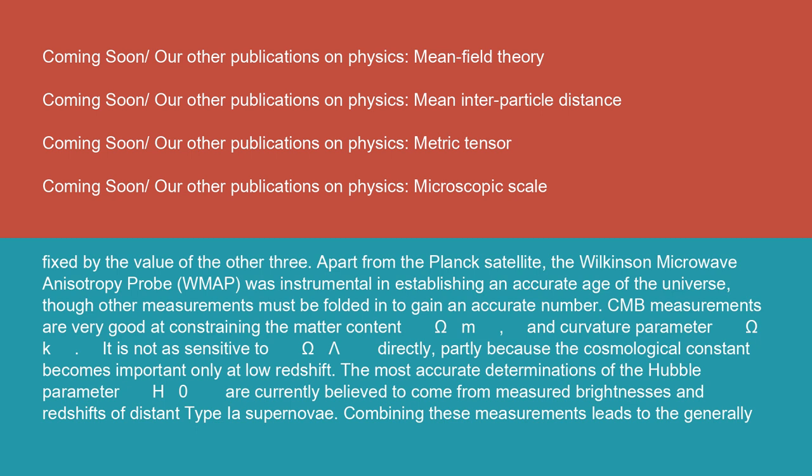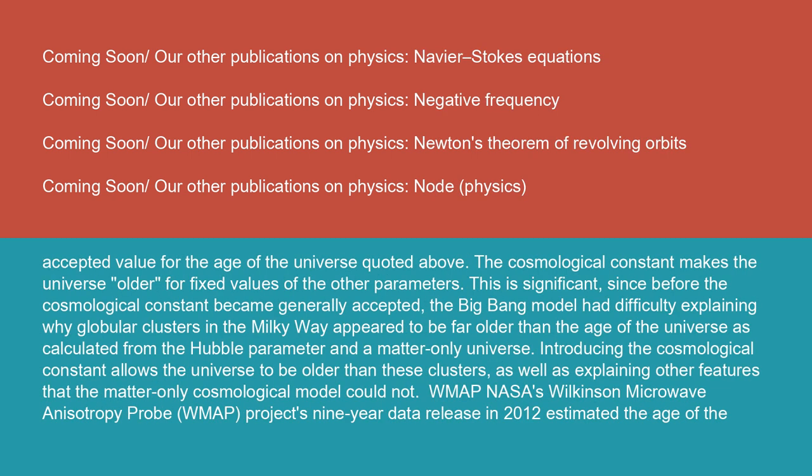The most accurate determinations of the Hubble parameter H0 are currently believed to come from measured brightnesses and redshifts of distant Type Ia supernovae. Combining these measurements leads to the generally accepted value for the age of the universe quoted above.